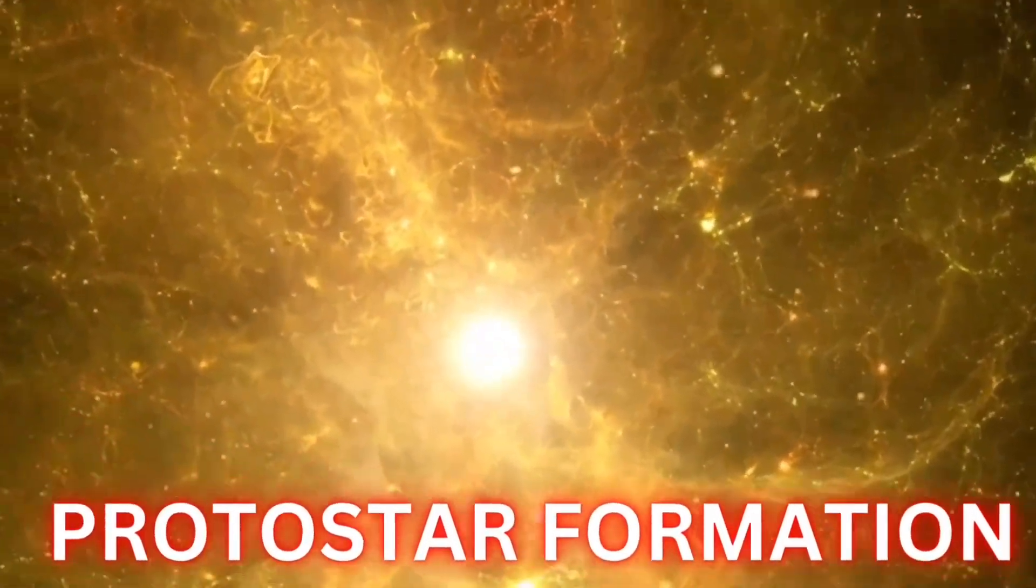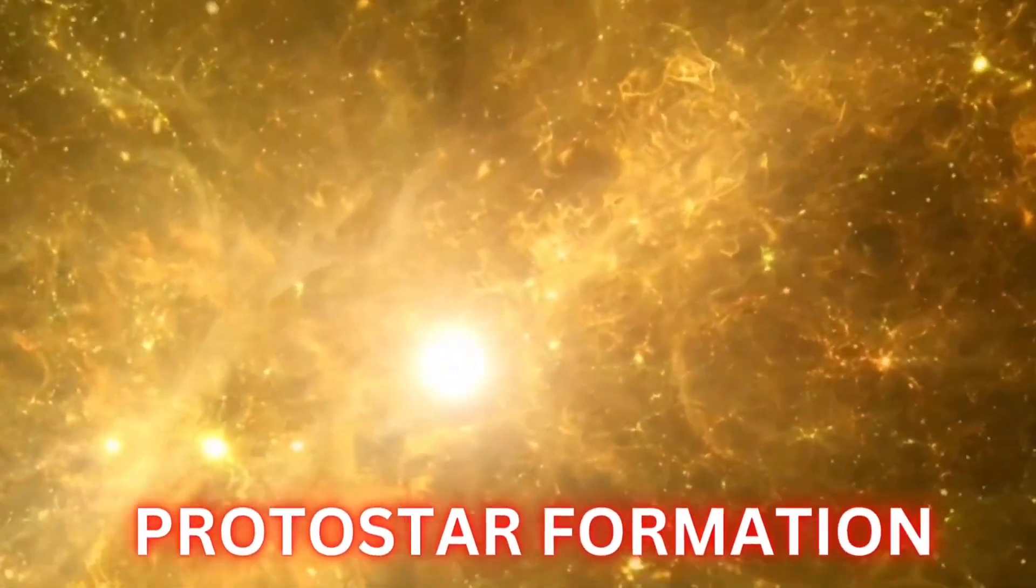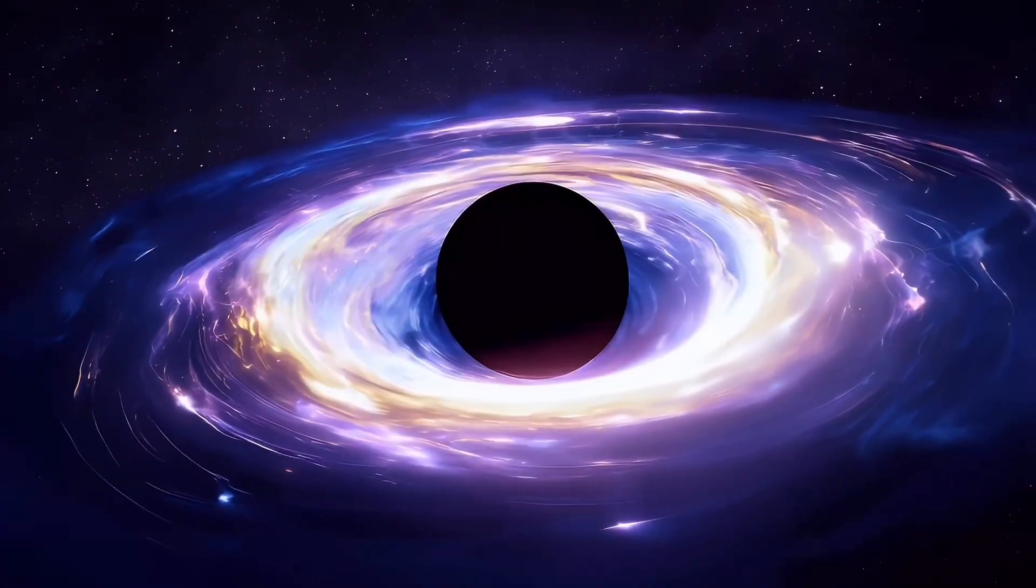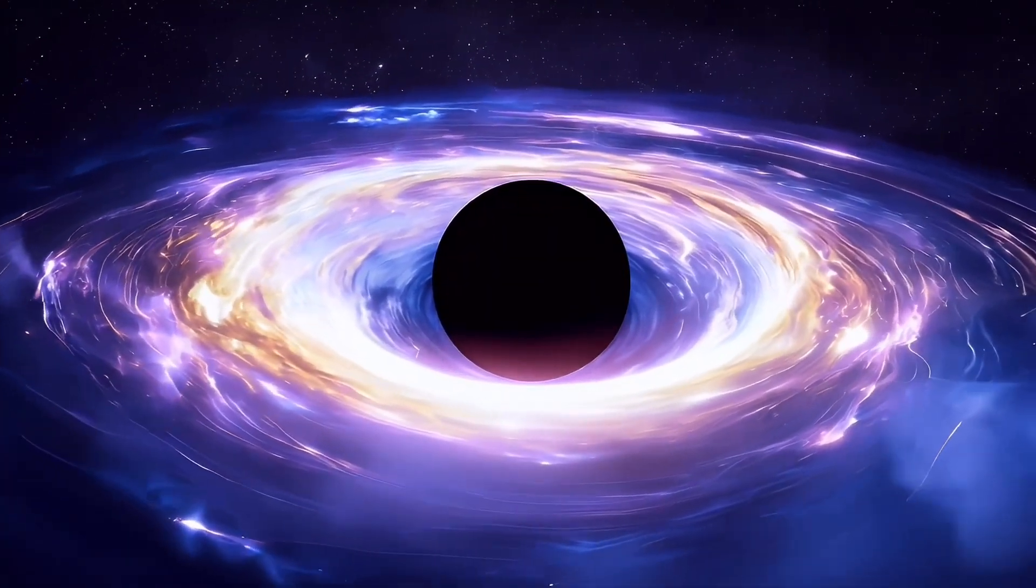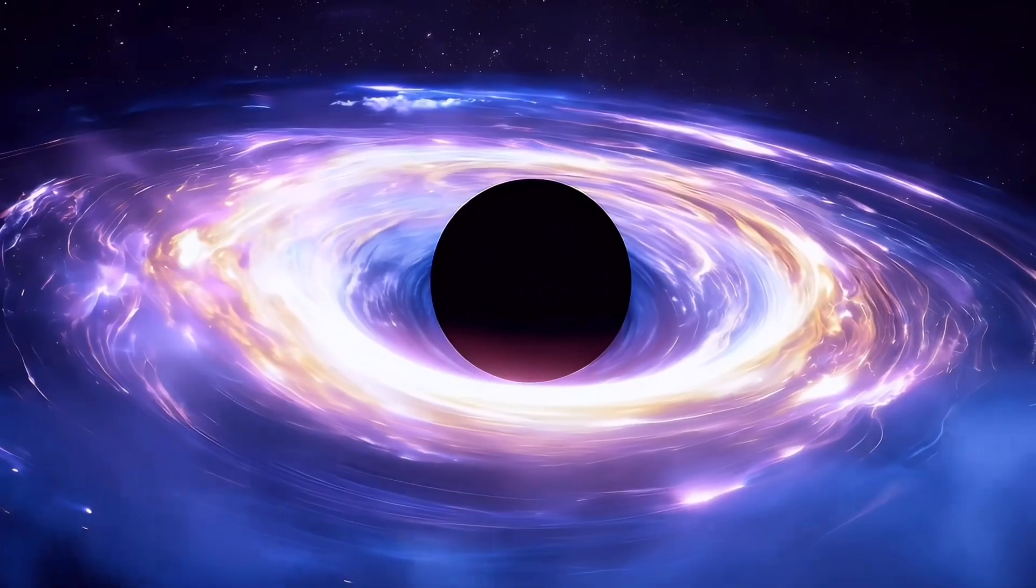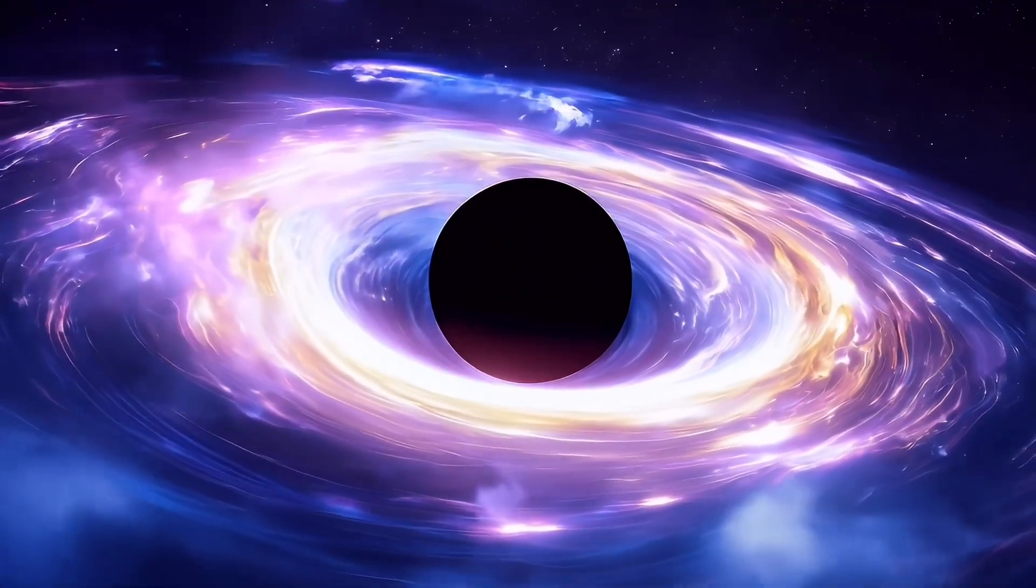Protostar formation: as the cloud collapsed, it rotated faster and flattened into a disk. The center of this disk formed a protostar, which continued to gather material from the surrounding disk.